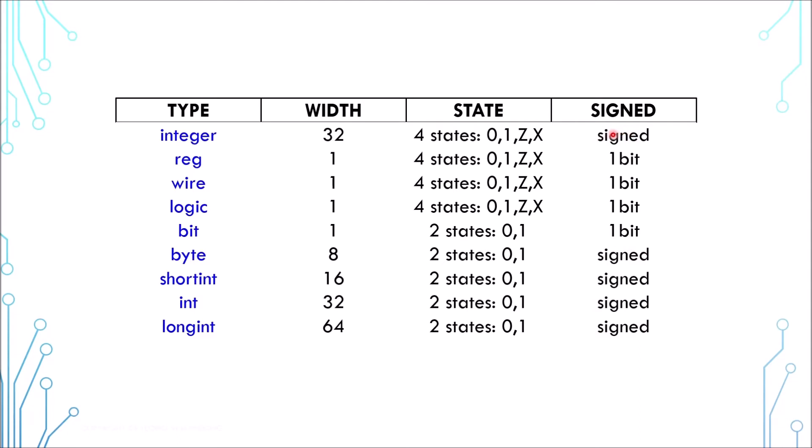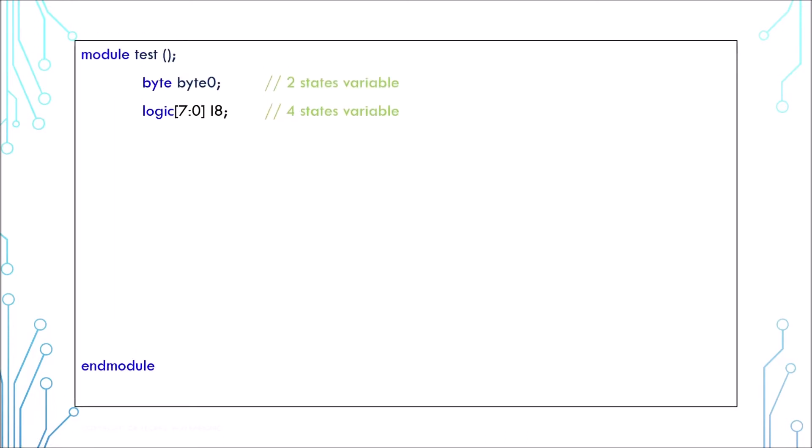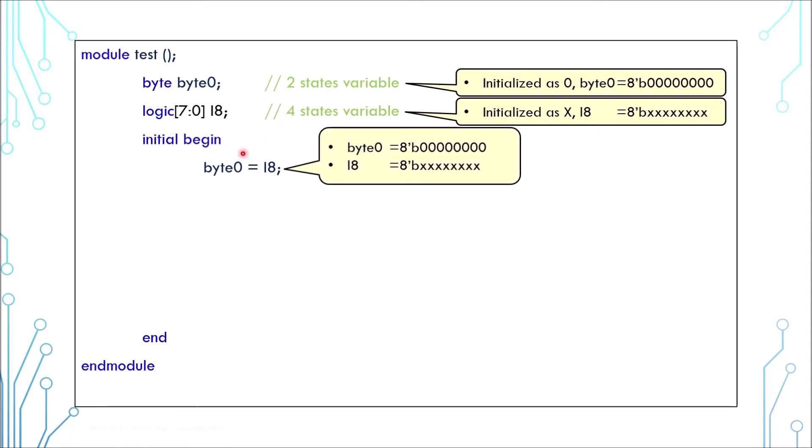Now here's a showcase of a 2-state variable and a 4-state variable. When you declare a variable, it will be initialized. In general, 2-state variables are initialized to zero, while 4-state variables are initialized to unknown X. You can assign a 4-state value to a 2-state variable, but it's not recommended. In this case, after the assignment, byte is still zero even though logic is X. That's because a 2-state variable cannot store X or high Z—any X or high Z bit will be converted to zero.